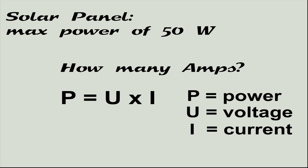We have a 50W solar panel. Under the assumption that the panel produces 50W under the given conditions, to how many amps do the 50W correspond? Or in other words, how much current does the panel produce under optimal conditions? Power is a function of current and voltage and can be calculated with this simple equation.